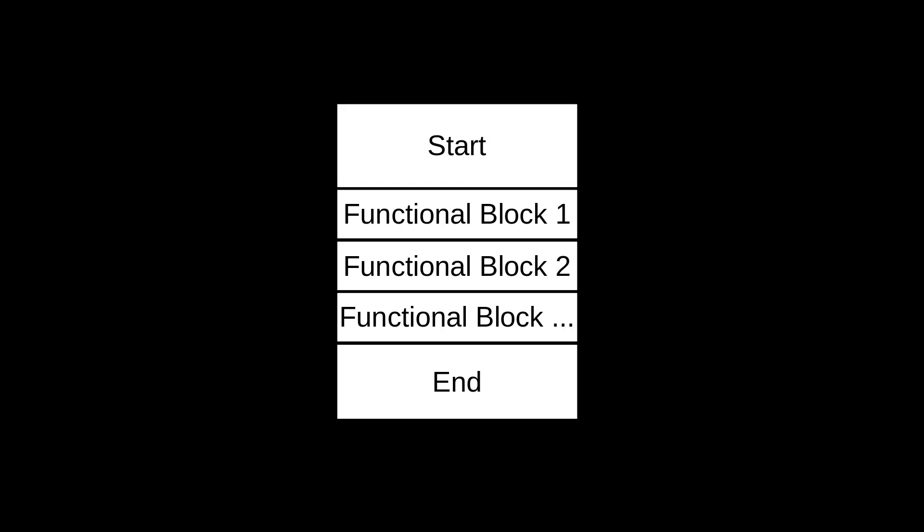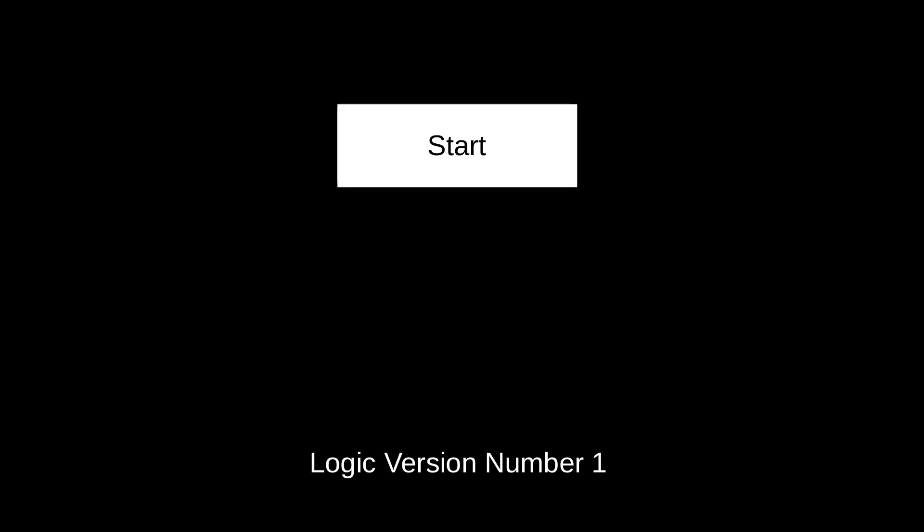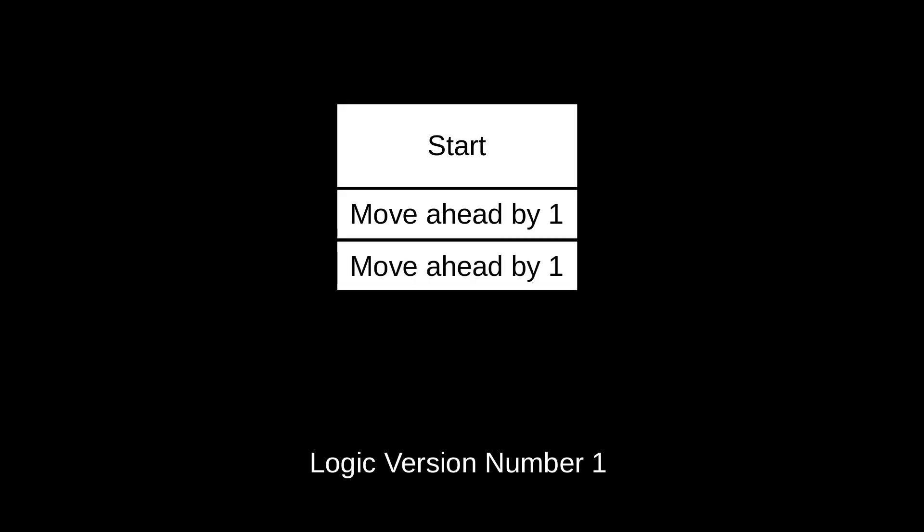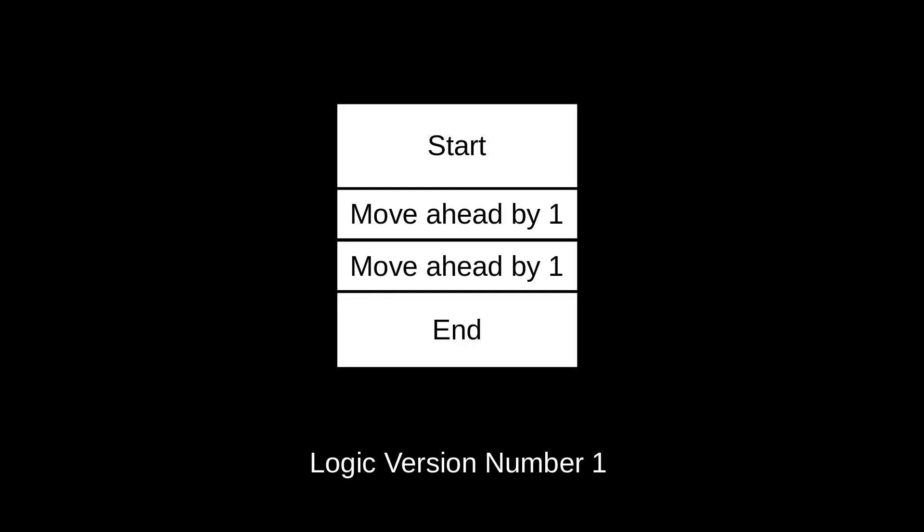Now let's look at our previous problem and see how we could develop our logic using this template. We have our start block, which says the human is currently on position number one. The first functional block says: move ahead by one — this makes the human go from position one to position two. The next functional block says: you are not on position three yet, so let's move you again by one. The human moves from position two to position three. Voila — he is at position three, and that's all we wanted. So we end the logic.